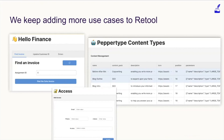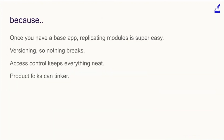We've stopped building internal tools as much, and all of our peripheral tools end up going to Retool almost automatically. We do this because of four main things: one, once you have a base app, replicating modules becomes super easy with copy-pasting across apps. Two, we use versioning so nothing really breaks. Three, access control keeps everything neat, limiting access to only the data each person needs to see. And most importantly, product folks can really go in and tinker without needing too much engineering help.